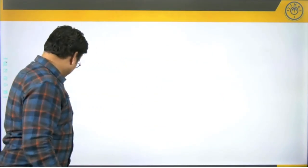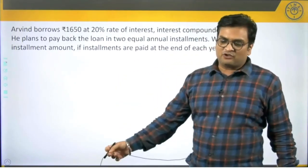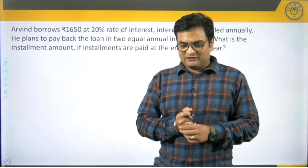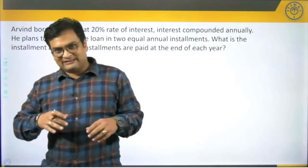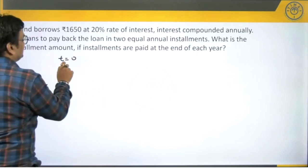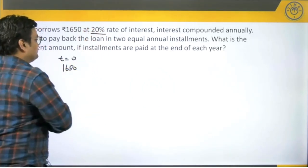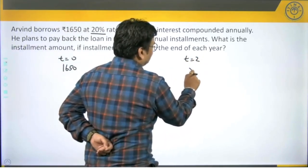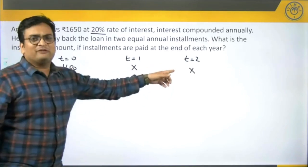Next, we shall take up the concept of installments by working through examples. The first example: Arvind borrows 1,650 rupees at 20 percent rate of interest, compounded annually. He plans to pay back the loan in two equal annual installments at the end of each year. How to approach this: at t=0 today he takes the 1,650 rupee loan, then after the first year he pays back amount x, and after the second year he pays back x again — equal annual installments. We need to find x such that these two installments clear the loan.